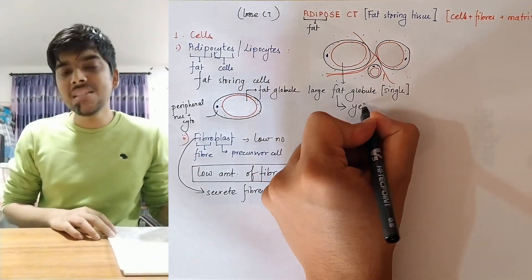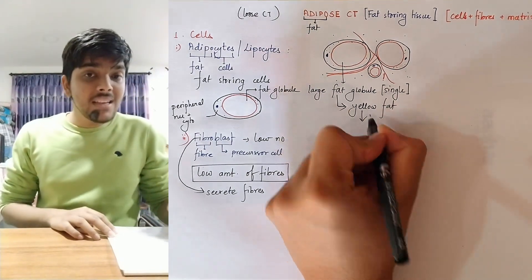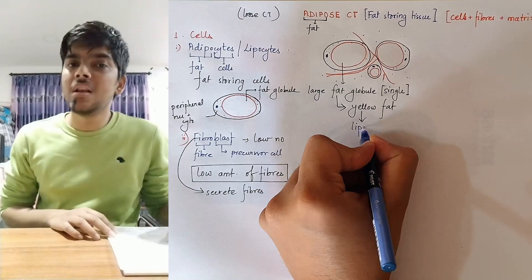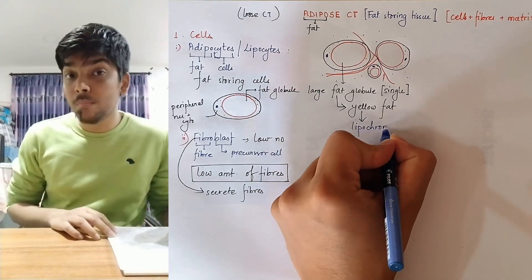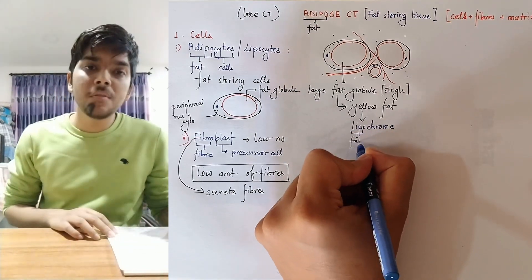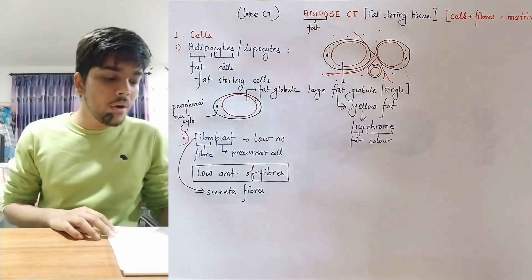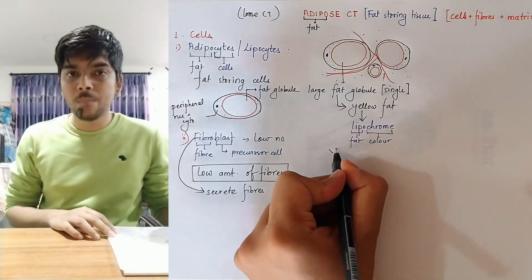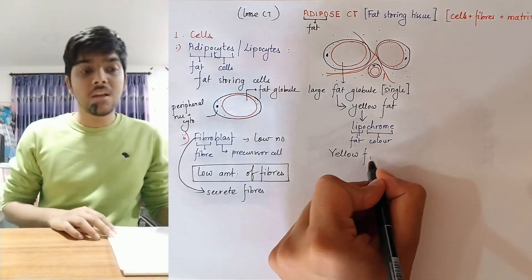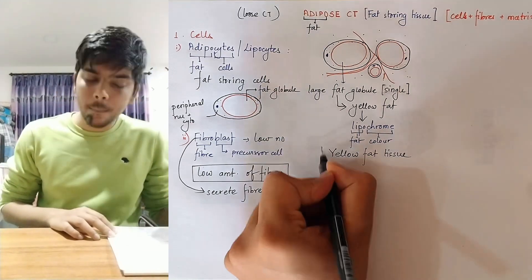The fat stored in these fat globules is yellow fat. The fat is yellow due to the presence of the pigment lipochrome, where lipo means fat and chrome means color. So due to the presence of this fat-color pigment, the fat stored in this tissue is yellow. Since it's yellow, it imparts a yellow color, and it is known as yellow fat tissue.